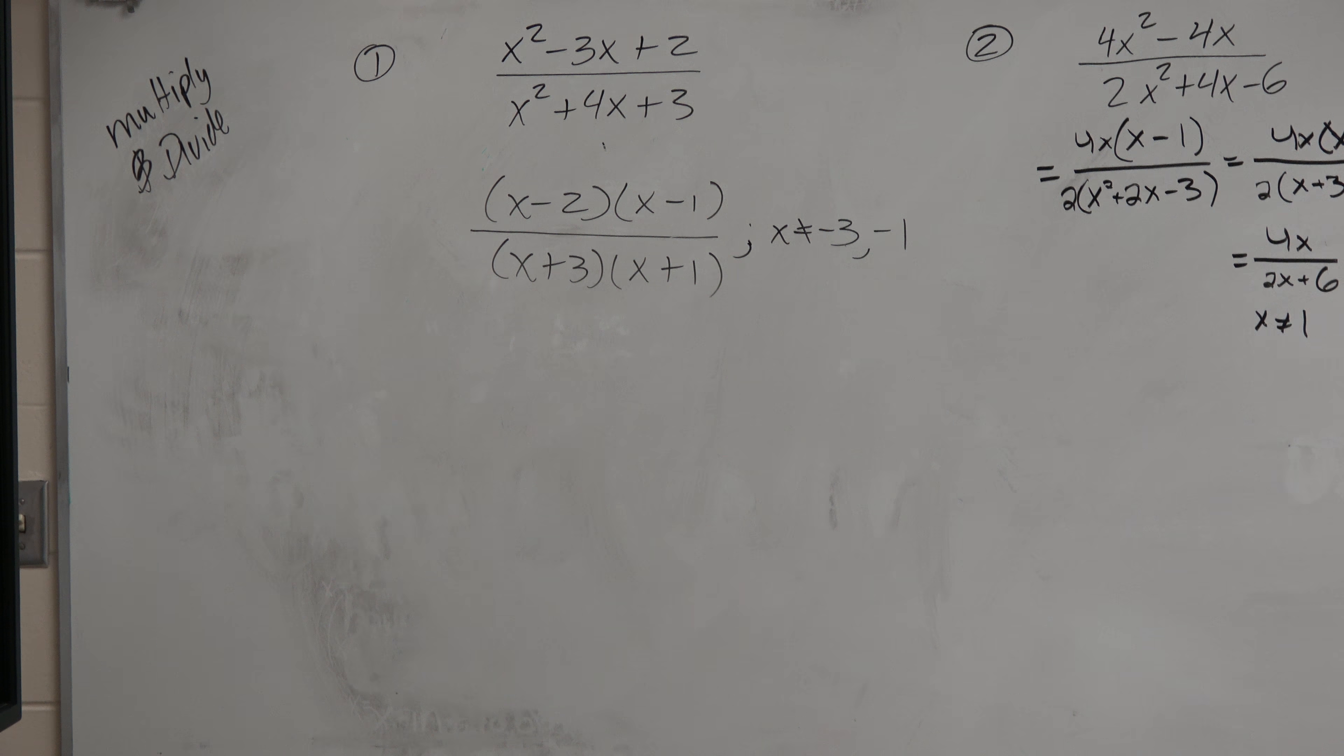But then again, we're talking about their domain restrictions. So x cannot equal negative 3 and negative 1, right? Because those are the values that make the denominator 0. We're not talking about holes, asymptotes, or domain. We just know that x cannot equal those values. So it's just an unrestricted value.